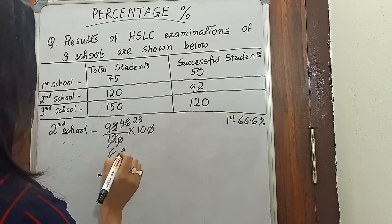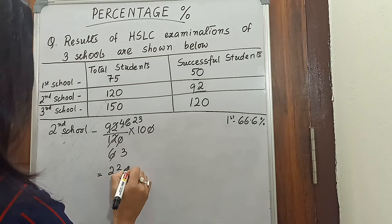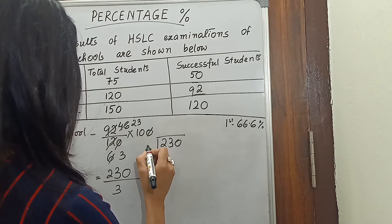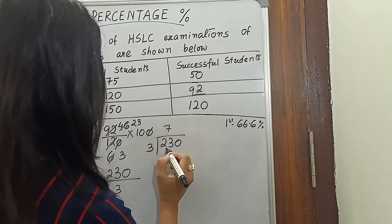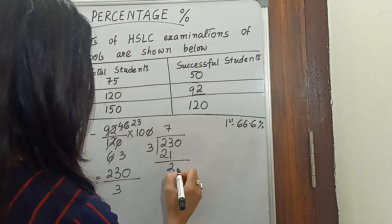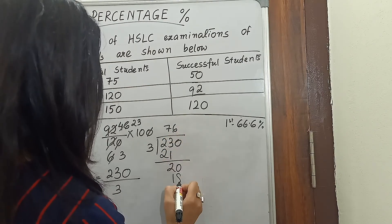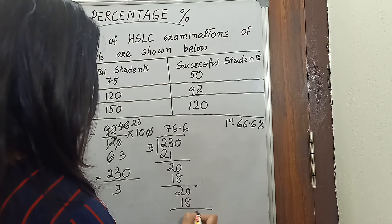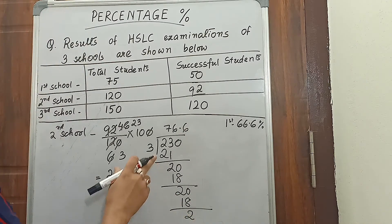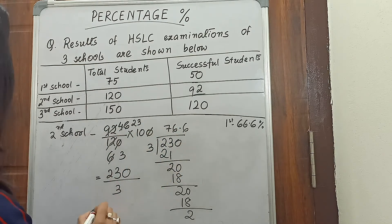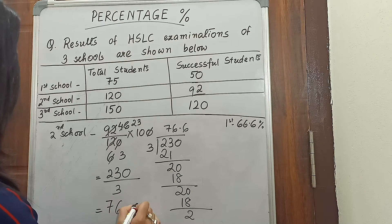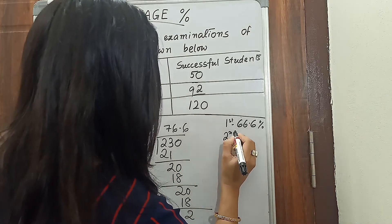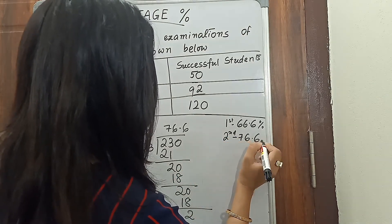Simplifying 92 over 120 gives 23 over 30, so 23 into 10 is 230 divided by 3. Dividing 230 by 3 gives us 76.6 percent. So the second school got 76.6 percent.